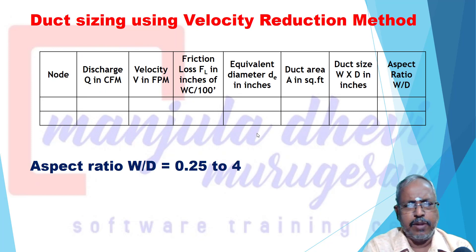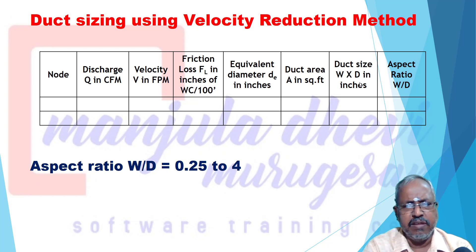Here is the tabular column with the following fields: duct straight segment, velocity, friction loss (FL in inches of water column), equivalent diameter (DE in inches), duct area (A in square feet), duct size (W by D in inches), and aspect ratio (W by D).